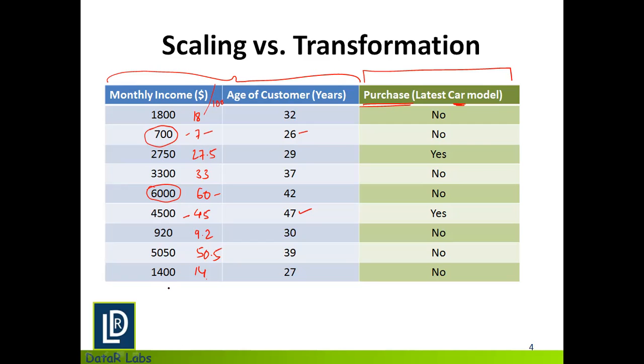For instance, if there would have been a technique where monthly income was between 0 and 1, and similarly even the age of customers was between 0 and 1. If I had such a technique, wouldn't it have been a fantastic thing to have? Because now not only do I have the two features which are of the same scale, I also have the extreme ends which are exactly same.